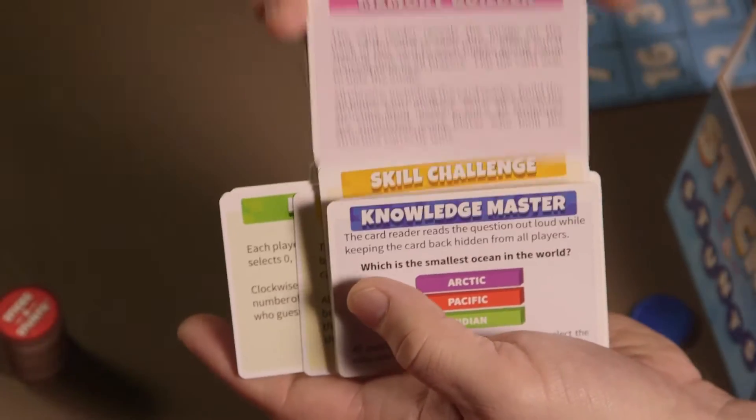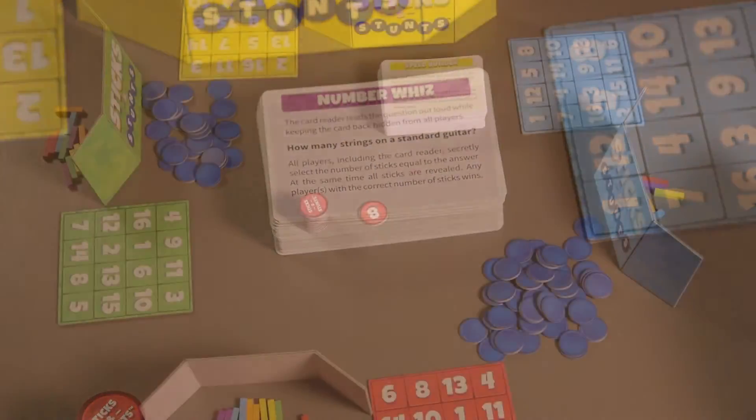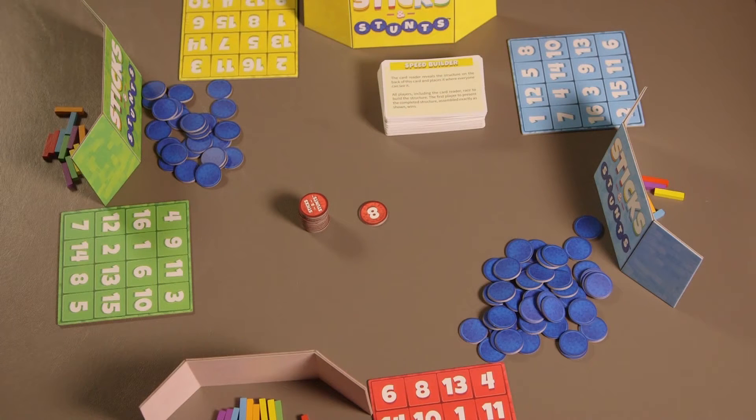Shuffle the activity cards and place about half the cards, activity side up, near the center of the play area forming a draw deck. The starting player is the card reader for the first round.